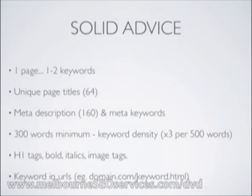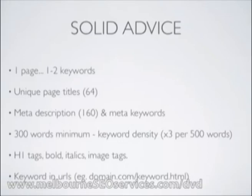You want to make sure that you choose one keyword and optimize one keyword per page. You can do variations of that keyword. For example, if you're going after 'trading systems,' you might have 'trading systems' as your primary keyword, and secondary keywords could be 'trading system' or 'trading plans' — slight variations. You don't want to go too far away from that original primary keyword.